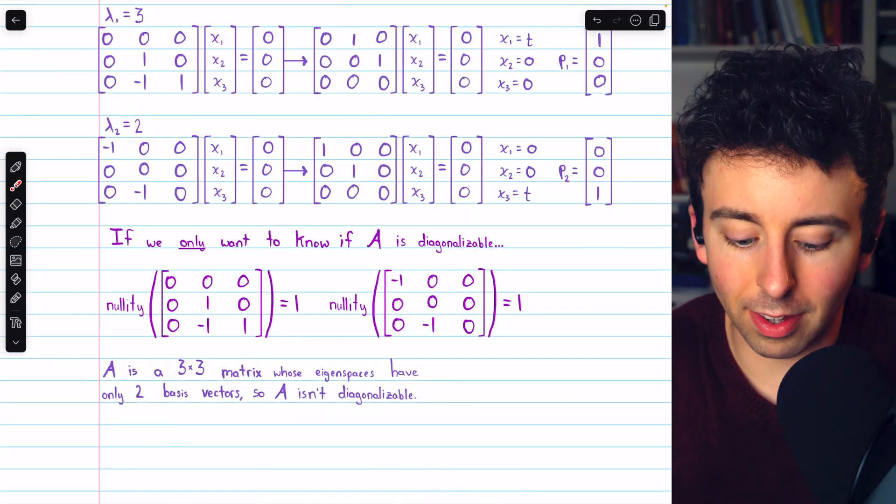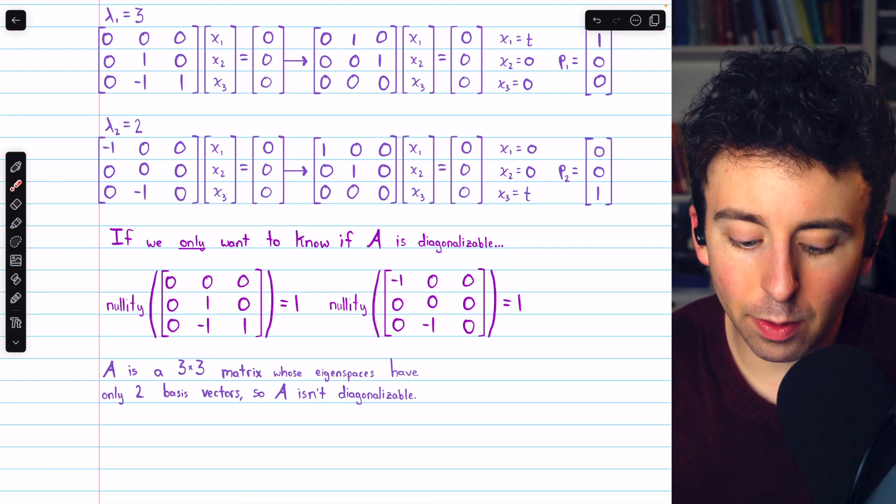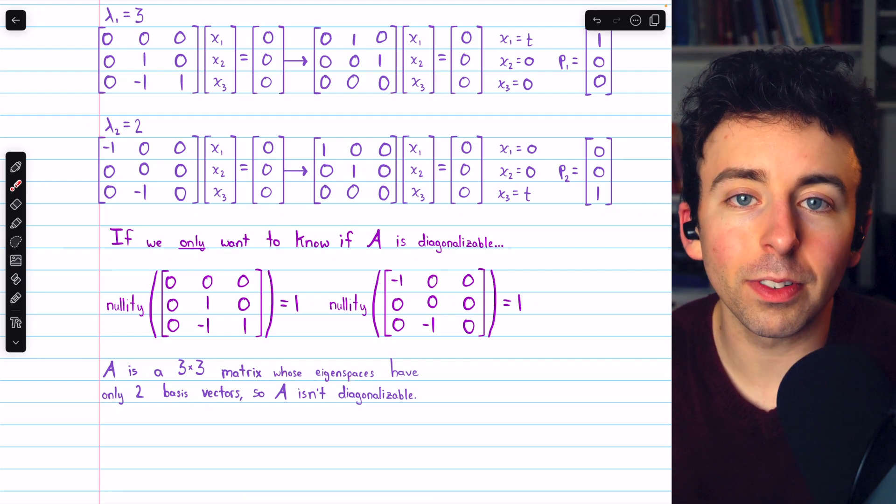Either method we choose, the solution is the same. A is a 3x3 matrix whose eigenspaces have only two basis vectors.